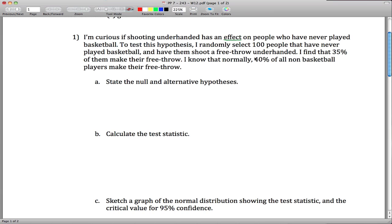To test this hypothesis, I randomly select 100 people that have never played basketball and have them shoot a free throw underhanded. I find that 35% of them make their free throw. So of my sample, 35% make it. In other words, p hat is 0.35. I know that normally, 40% of all non-basketball players make their free throw.